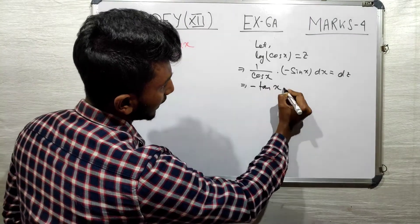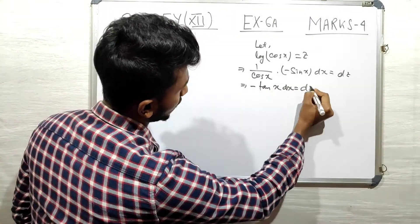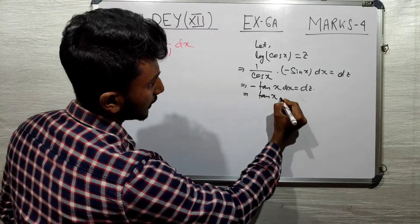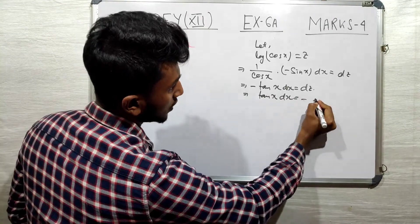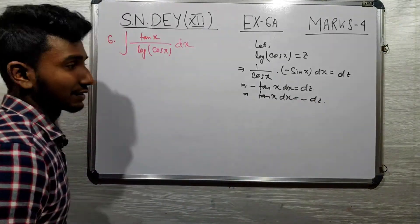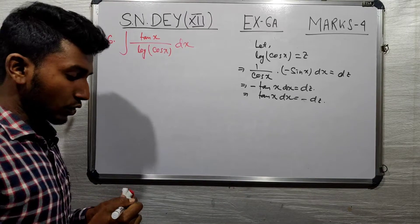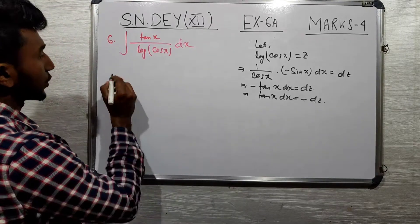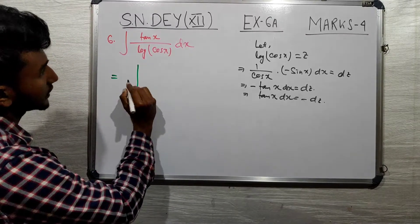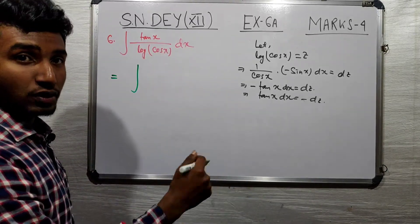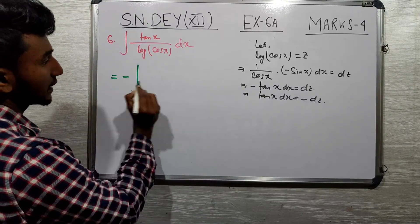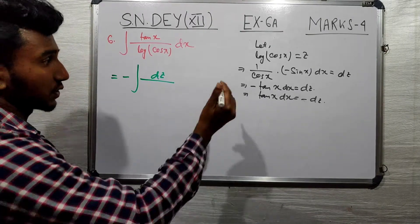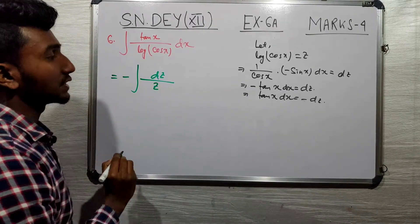The derivative of cos(x) is minus sin(x), so we get minus tan(x) dx equal to dz. That means tan(x) dx equals minus dz. And log(cos x), which is z — then we substitute by z.